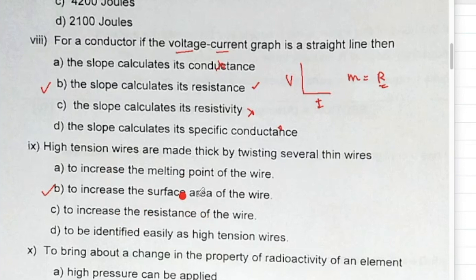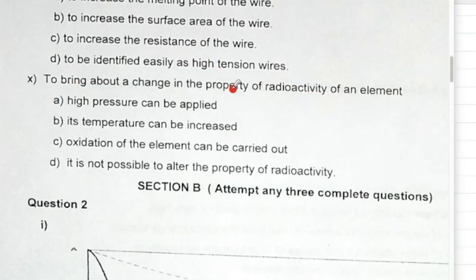Let us come to the 10th one. To bring about a change in the property of radioactivity of an element - high pressure no, temperature no, oxidation no. You cannot alter it, correct. So D is the correct one.